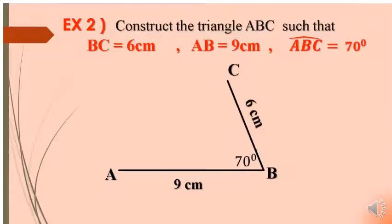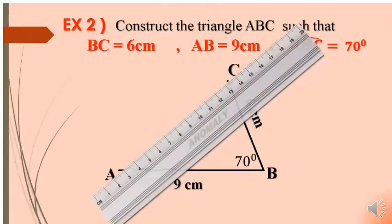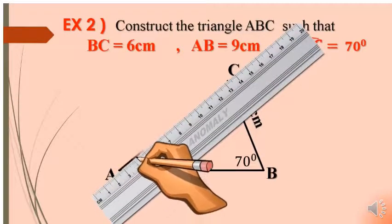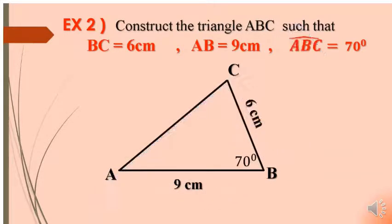Don't forget to mark the measure of angle and the length of side BC. The last step, we join A and C, and here it's triangle ABC.